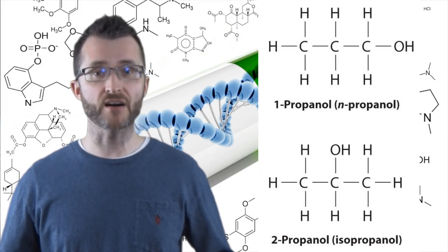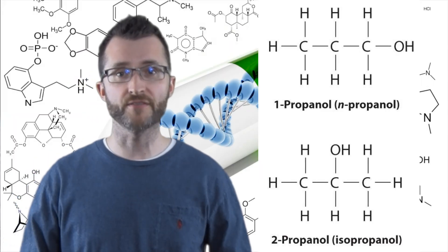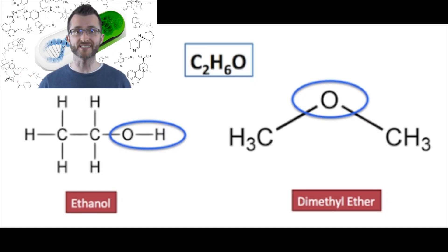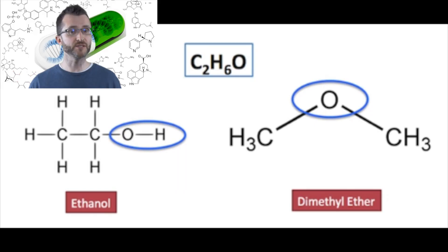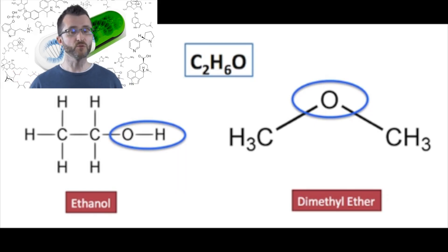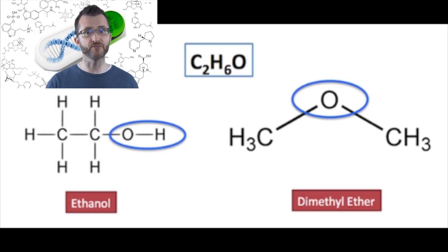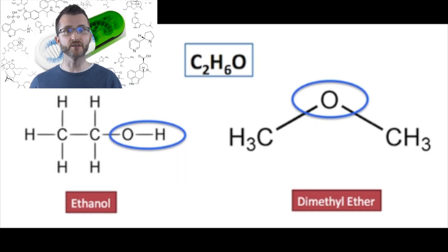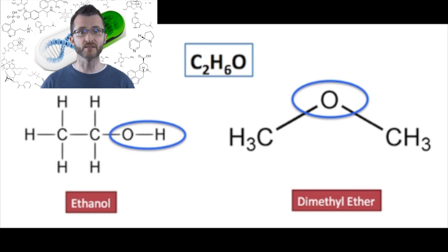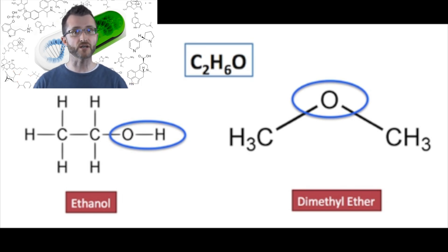These two structures are isomers of each other. In our second example, we again have the same number of C's, H's, and O's between the two structures. However, in one we have an alcohol as our functional group, and in the other we have an ether as our functional group. Again, we have distinctly different properties, but these two structures are still isomers of one another.